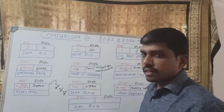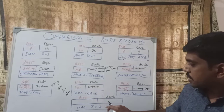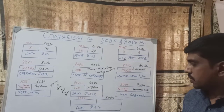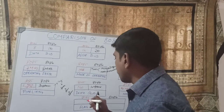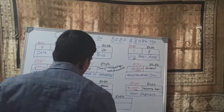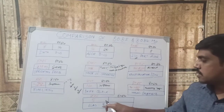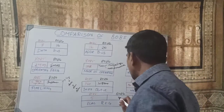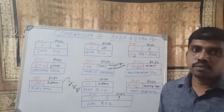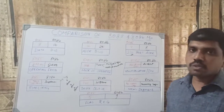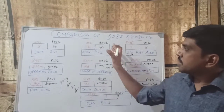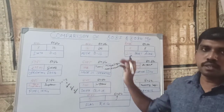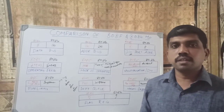The last property is the flag register. The flag register is mainly used to check the status of the arithmetic and logical unit. In the 8085 microprocessor, it has five status flags. In the 8086 microprocessor, it has nine status flags. A brief discussion of these properties in 8086 architecture will be covered in next week's session. Thanks for visiting the channel. Thank you.